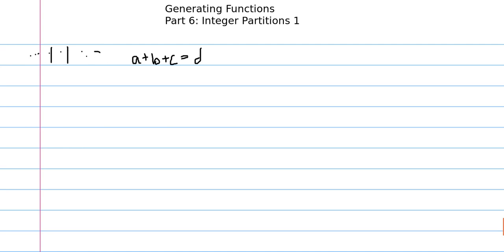And we create a bijection from the number of non-negative integer solutions here to the number of orderings of these objects. And obviously, that's just d plus 2 choose 2. I'm not going to use generating functions to do this problem, because it's a bit overkill — I've just solved the problem.